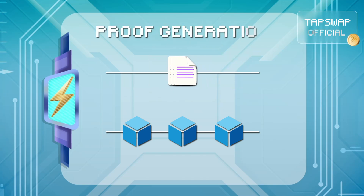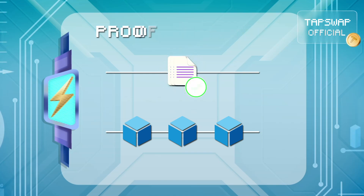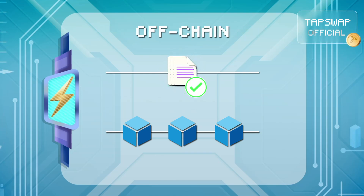Then it's time for proof generation. For each transaction batch, a validity proof, which mathematically confirms that all transactions were valid, is created off-chain.